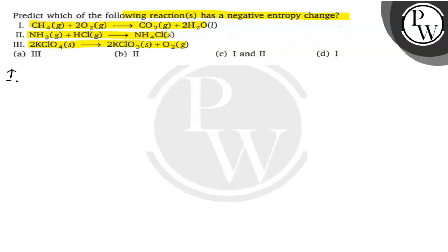First, for reaction 1, the entropy change will be 1 minus 3, which equals minus 2, which is negative. So option 1 is correct.